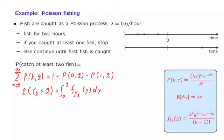We have a formula for this density given by the Erlang PDF. So we could take this expression, plug it in, evaluate the integral, and obtain the same answer as before. Clearly, in this case as well, the first approach is the simpler one, because these probabilities are already available to us.